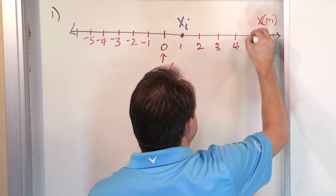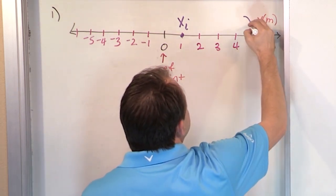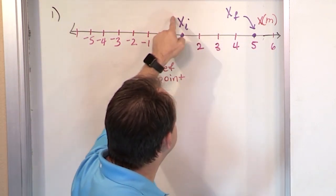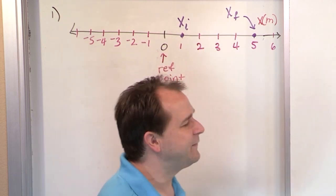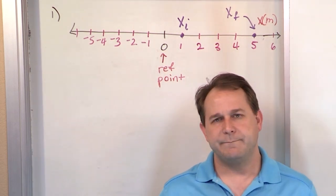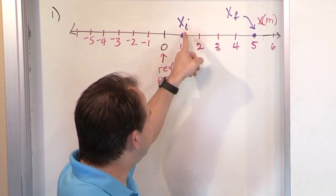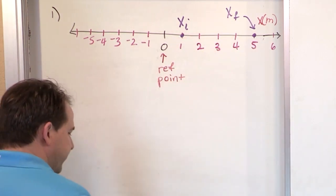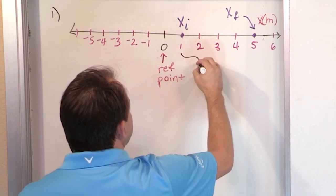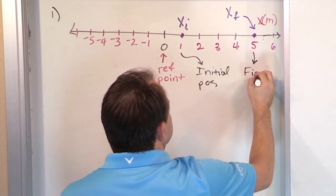And then my final destination, let's say in this example, is x equal to five away from the origin. So I'm going to label this guy x sub f. You need to get used to the idea in physics of seeing variables like x with little letters or numbers underneath it. Those things are just telling you something — so the i means that's my initial position, and f is my final position.